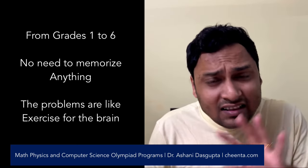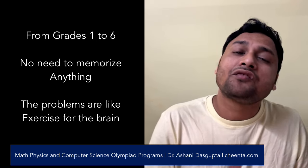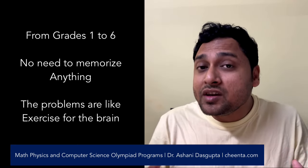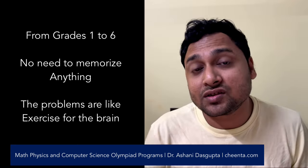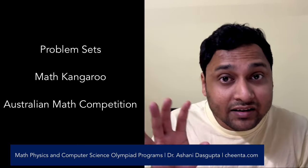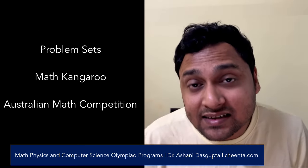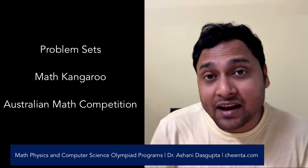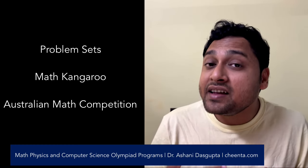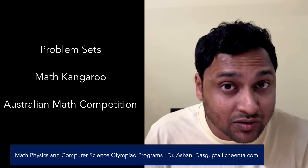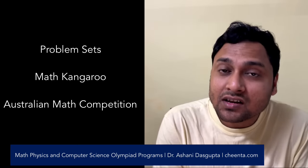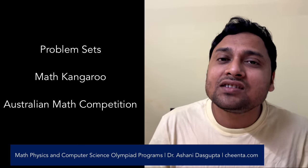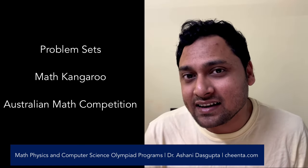So, these are the three books that we strongly suggest. Of course, in our elementary school mathematics or IMO foundation program, we use other problem sets and resources as well. Let me tell you a little bit more about those problem sets. For example, we use problems from Australian math competition and Math Kangaroo. These are very nice problems which challenge the mind of the students. So, apart from the books, you should also try to use the problems from these competitions, which are actually interesting for the development of the child.